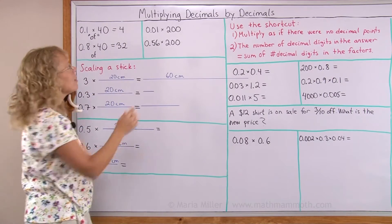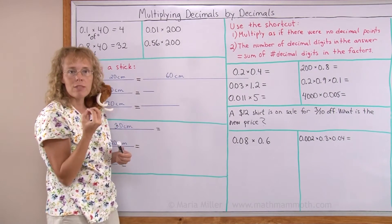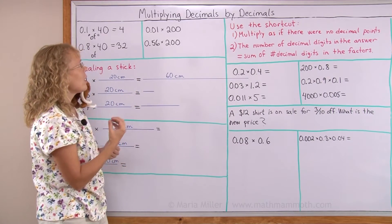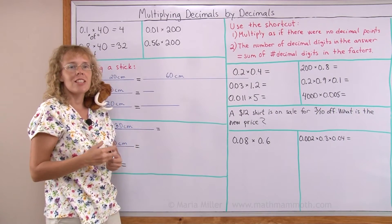I can use the same idea here. This is 1 hundredth. And then this translates into of. So 1 hundredth part of 200. You just divide 200 by 100 and get 2.